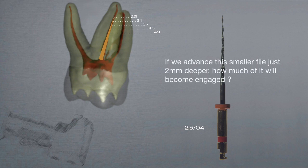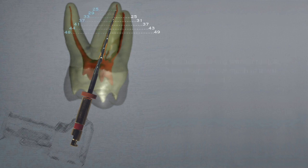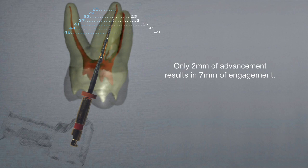If we advance this smaller file just two millimeters deeper, how much of it will become engaged? Only two millimeters of advancement results in seven millimeters of engagement.